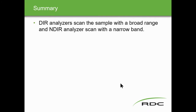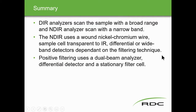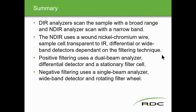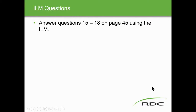Summary: DIR analyzers scan the sample with a broad range of IR wavelengths; NDIR analyzers scan a narrow band. Non-dispersed IR uses a wound nickel-chromium wire source and sample cells transparent to IR. Differential or wideband detectors are used depending on the filter technique. Positive filtering uses a dual beam analyzer with a differential detector and stationary filter cell. Negative filtering uses a single beam analyzer with a wideband detector and a rotating filter wheel. IR analyzers can be used on samples extracted from the stack or in-situ (open path).